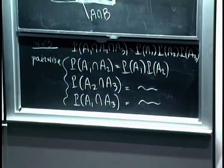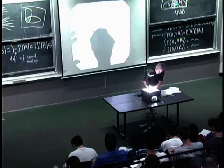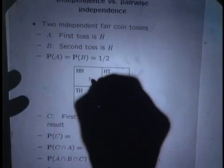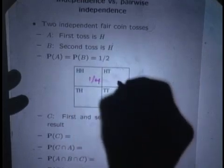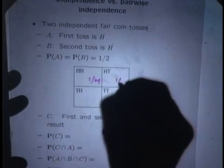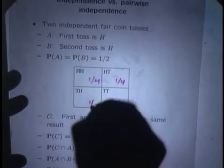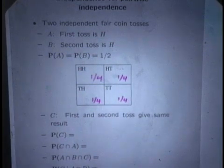Let's illustrate the situation with an example. Suppose we have two coin flips. The coin tosses are independent, so the bias is 1/2. So all possible outcomes have a probability of 1/2 times 1/2, which is 1/4. And let's consider now a bunch of different events.